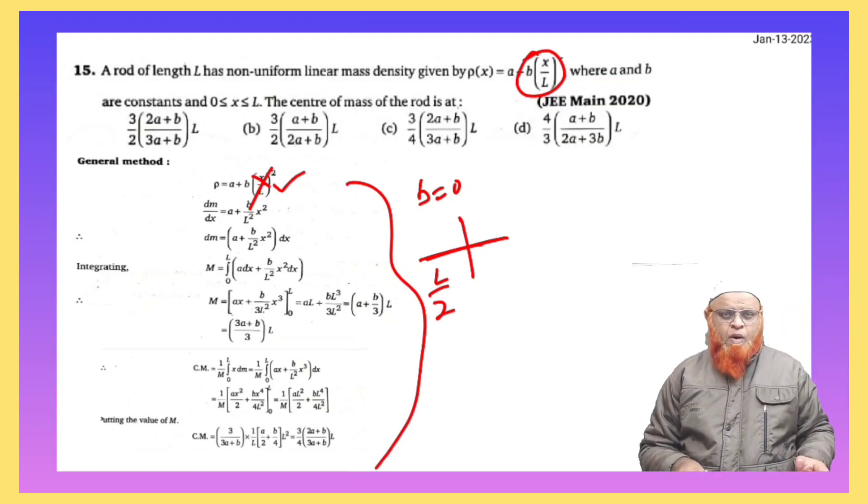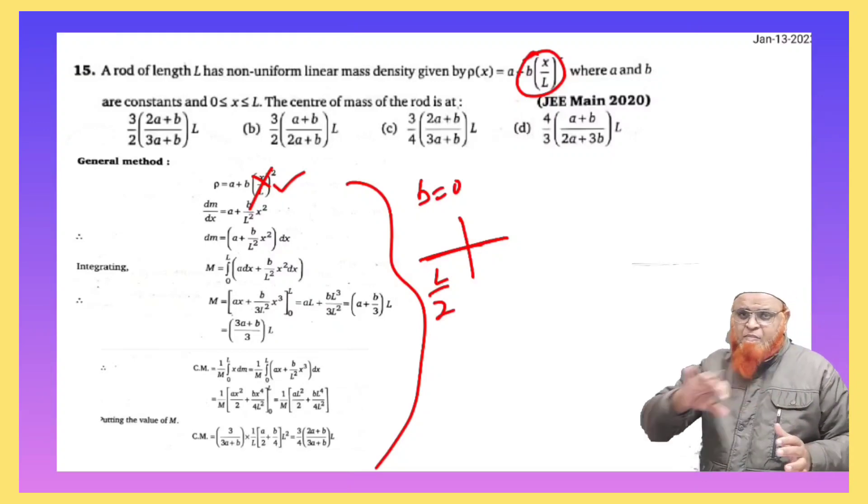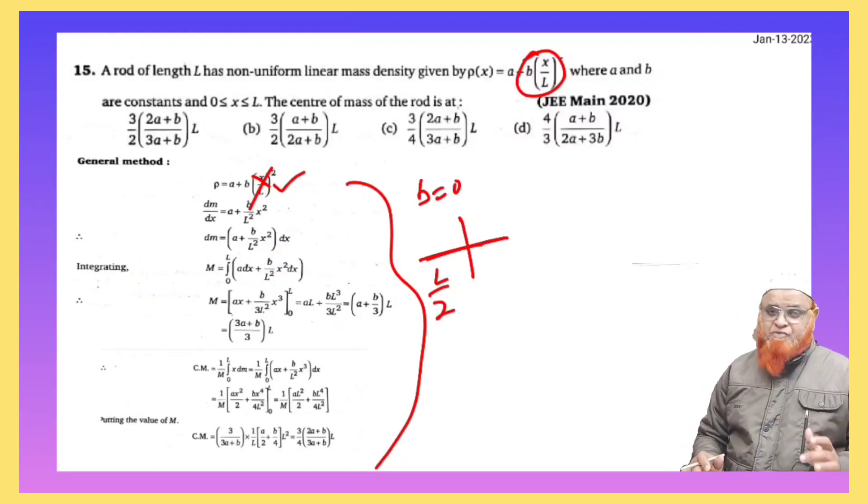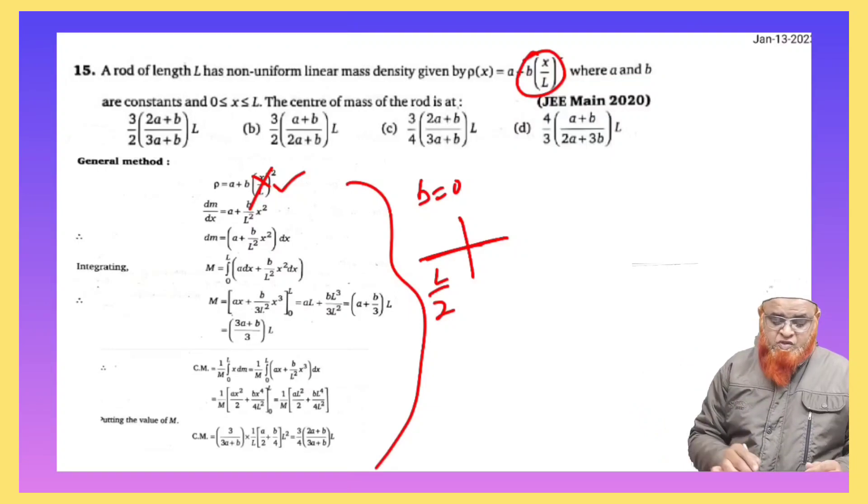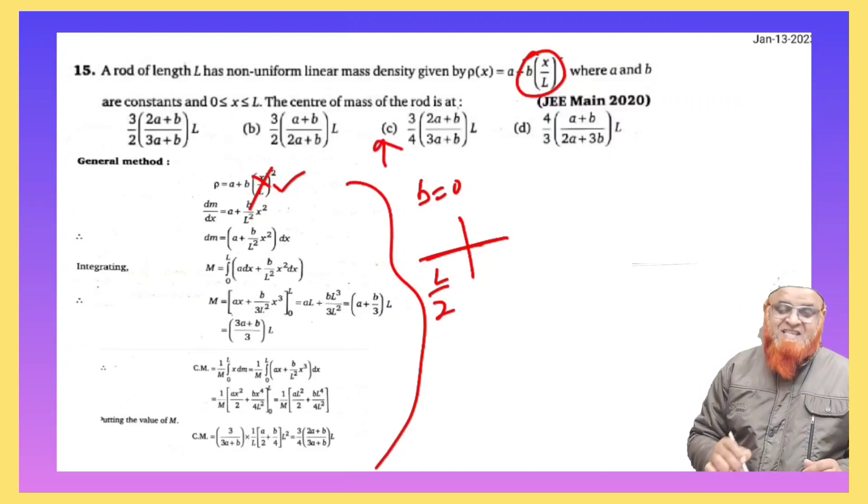So now what you have to do here is if you take B equals 0, the non-uniform part of the rod is going to be eliminated. In a similar way, if you see the four options and go on substituting the value of B equals 0, you will find a very funny and interesting thing that only option C is